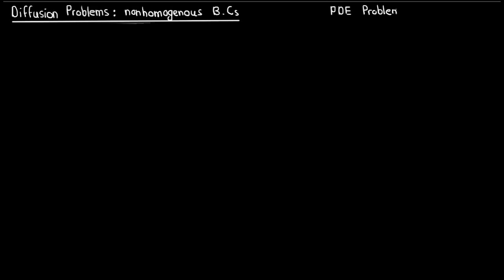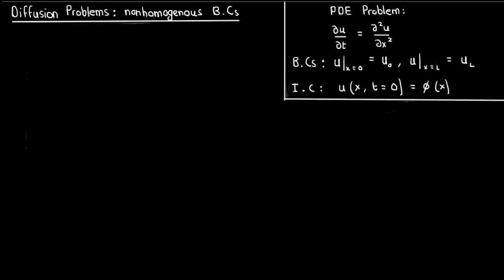Suppose I have a really simple PDE problem once again that describes heat conduction along a one-dimensional domain, so just like last time. Here's the governing partial differential equation, and these are the boundary and initial conditions. The only difference from the previous problem we did is that the boundary conditions on U aren't both zero.